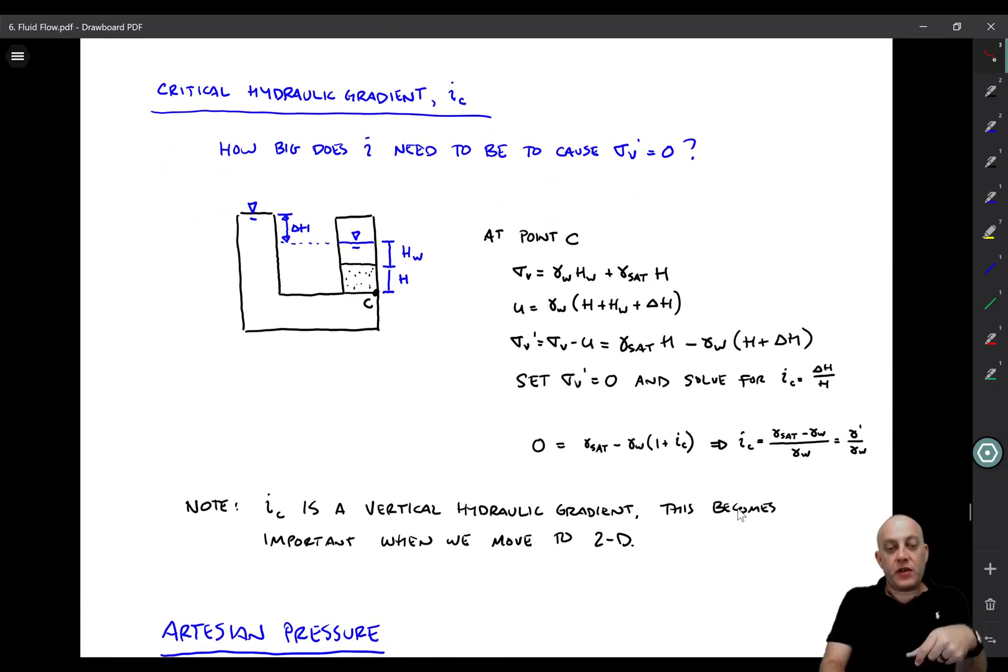So let's talk about the critical hydraulic gradient, or what we call I sub C. That's the vertical hydraulic gradient required to cause vertical effective stress to be equal to zero. And this is a really important concept when we do seepage analyses. A lot of the time, we will look at the vertical exit gradient, like where the water is exiting underneath a levee, for example, or a dam. And we'll make sure that that vertical exit gradient is adequately smaller than the critical hydraulic gradient, because we don't want soil to become quicksand. It loses strength and stiffness. A dam or levee might fail as a result. So it's important for us to be able to derive that critical hydraulic gradient.